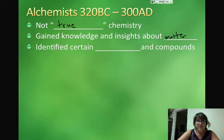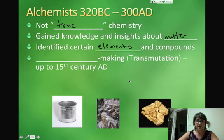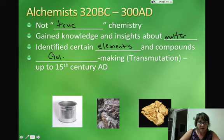But they gained a lot of knowledge and insights about matter and the world around them. And they were able to describe certain elements and compounds that were identified by alchemists. So not true scientists, but they certainly achieved a lot in extending our knowledge about the world around us. A lot of this came about through the idea of turning elements into gold.